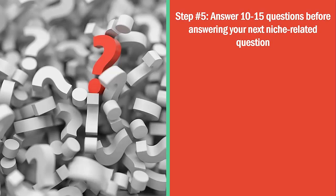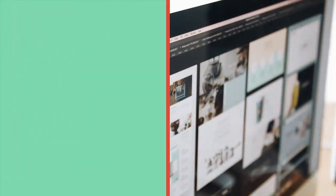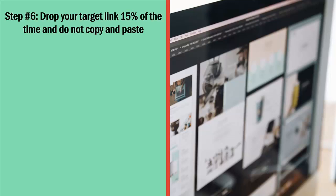Step number five: answer 10 to 15 questions before answering your next niche-related question. This is a big deal. You can't just answer only questions related to your niche — you're going to be too obvious. I suggest answering 10 to 15 other unrelated questions in a wide range of niches. When you answer these questions, drop links randomly to curated content that answers their questions and is extremely helpful. These links are not related to your niche. When you do this, you build authority and begin to look like a legitimate, bona fide member of the Quora community.